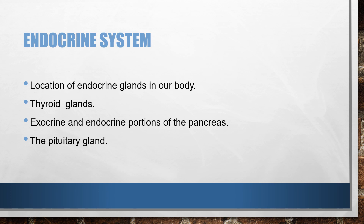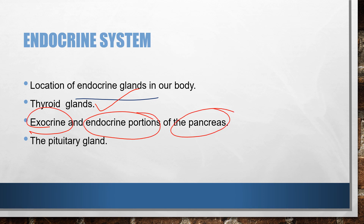Next comes the endocrine system. The location of the endocrine glands in our body is very important — you should know that location. Also important are the location of the thyroid gland, both the exocrine and endocrine portions of the pancreas — this diagram is very important — and the location of the pituitary gland. These are all the important diagrams of the endocrine system.